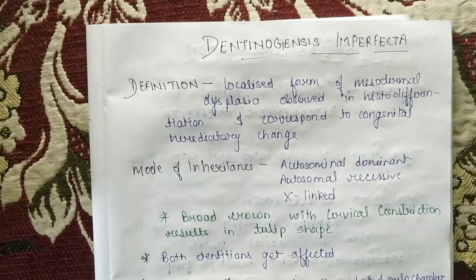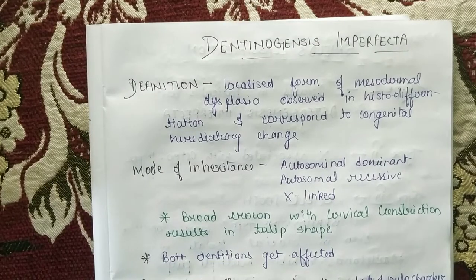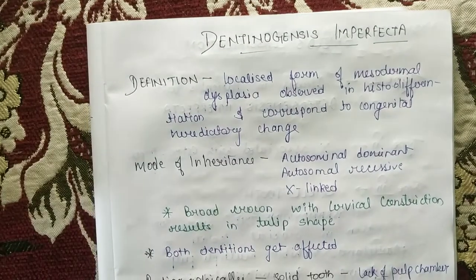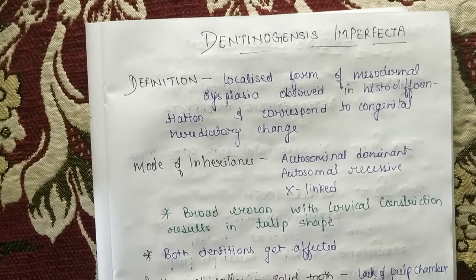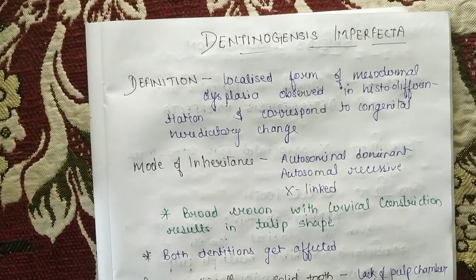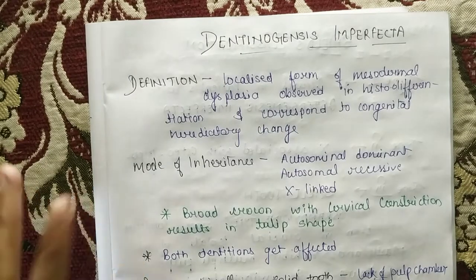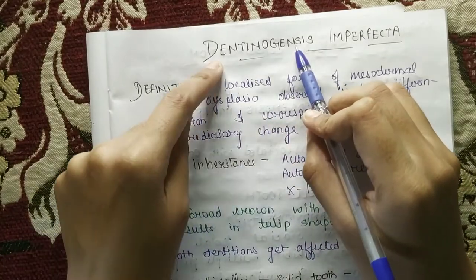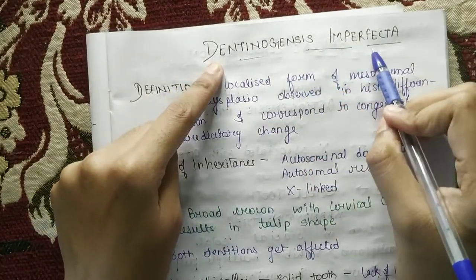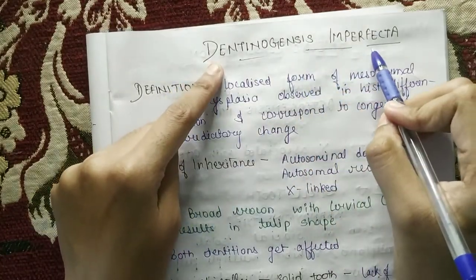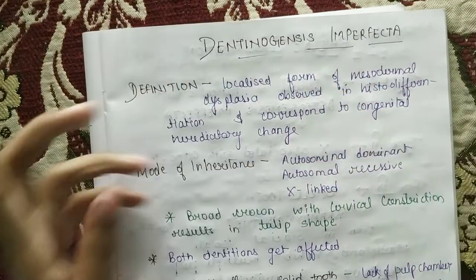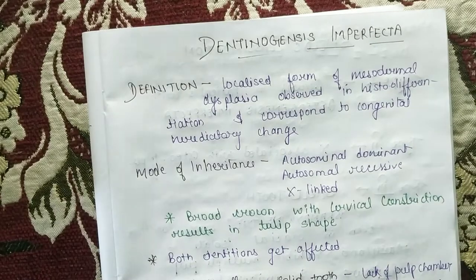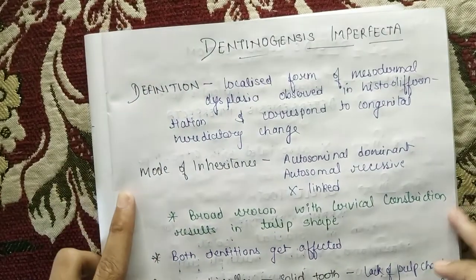Hello everyone, welcome to SAME — Study Art Motivation and Education. In this video we are going to discuss dentinogenesis imperfecta. As the name suggests, dentinogenesis — yani ki during dentin formation, kuch to bigad gaya, jis ki wajah se it became imperfect. Simple. Ab agar hum iski definition ke baat karein...